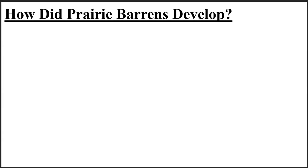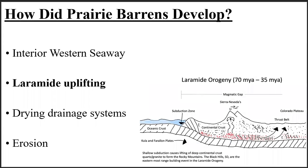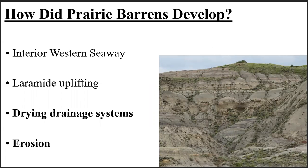Now that we've answered the question of what are prairie barrens, we should also answer the question of why are prairie barrens. During the mid to late Cretaceous, from around 90 to 55 million years ago, the Black Hills and much of the rest of North America was covered by the western interior seaway. Ocean sediments were compacted into shale and limestone formations rich in trace elements. The Laramide uplifting event that created the Rockies caused the seaway to recede, pushing the ocean sediment formations up to the surface. Once the western interior seaway receded about 55 million years ago, those formations were eroded into the soils we see today.